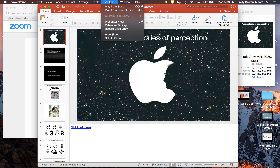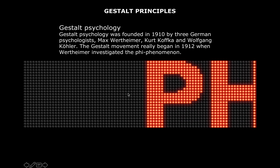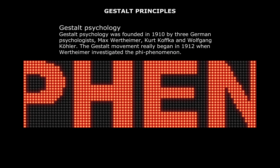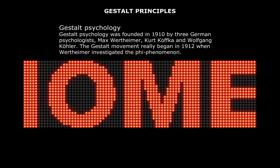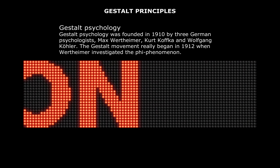Hey guys, let's talk about Gestalt theories of perception. Gestalt theories of perception came about in the early turn of the century by three German psychologists: Max Wertheimer, Kurt Kofka, and Wolfgang Kohler.